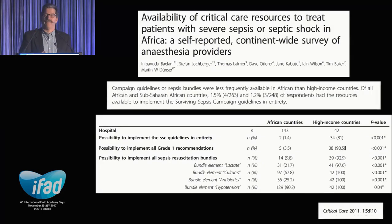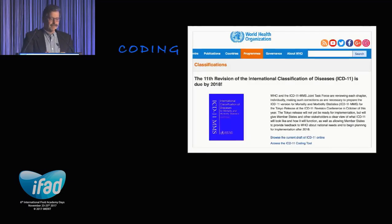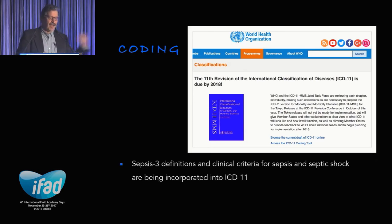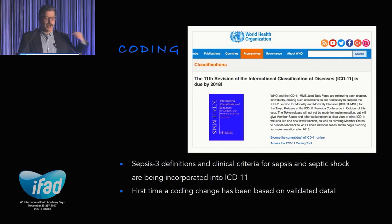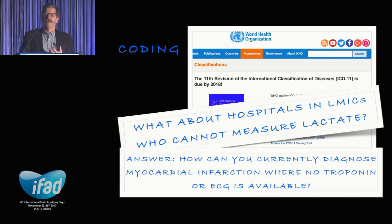A questionnaire study from Africa by Martin Dunster and colleagues showed that very few respondents from African countries were actually able to implement the Surviving Sepsis guidelines — less than 2% could do all of them, and measuring lactate or even giving antibiotics in time was not achievable. I'm grateful that ICD-11, coming out next year, will incorporate Sepsis 3 as its new international coding system — apparently the first time a coding change has ever been based on validated data. When I asked the committee about hospitals that can't measure lactate for septic shock, they pointed out: what happens if you have chest pain in the jungle and can't measure troponin or do an ECG? It's exactly the same issue — you can't cover the whole world.